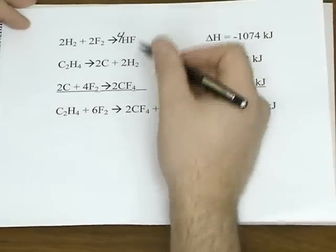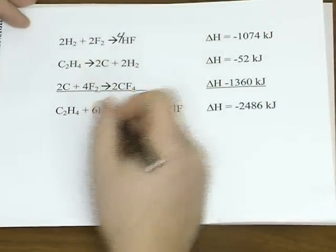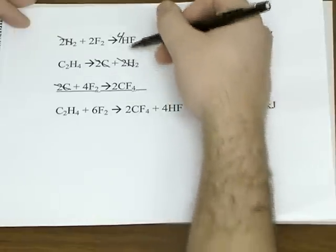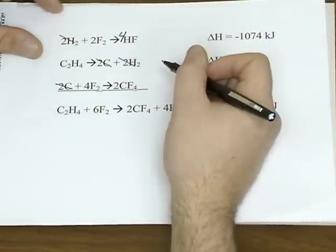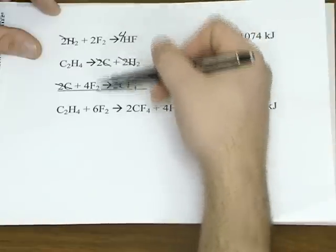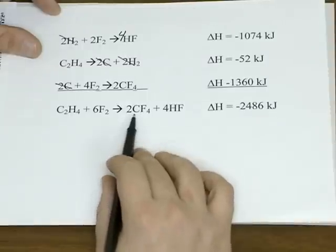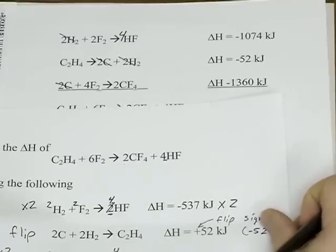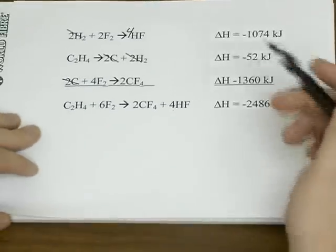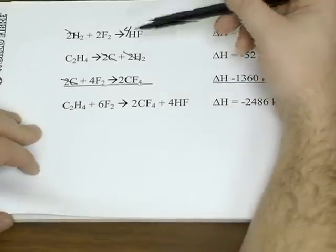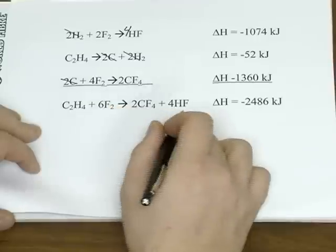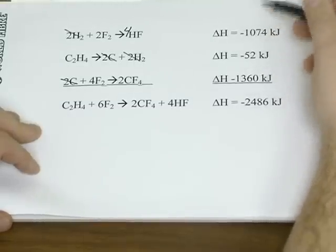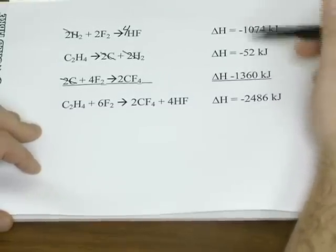So when you add these three equations together, notice that the things that weren't part of the overall equation, or the things we didn't want in the overall equation, our hydrogens, those carbons, they cancel out because they're on opposite sides of our arrow. So that leaves you with one C2H4 plus six fluorines. See the fluorines did work themselves out. Gives you two CF4s and four HFs. And again that is the equation that we want. And so like Hess's Law says, once again when you add the equations together, the enthalpy change for this reaction that you got from adding the equations together is going to be the sum of the enthalpy changes for each equation that you added.